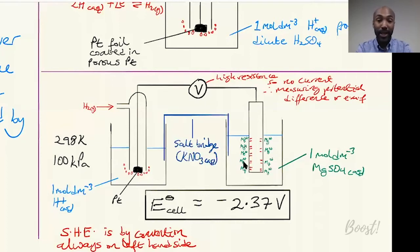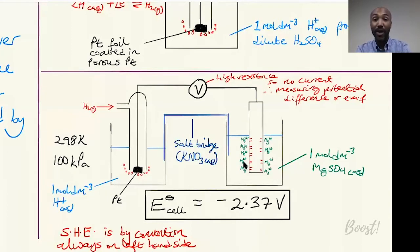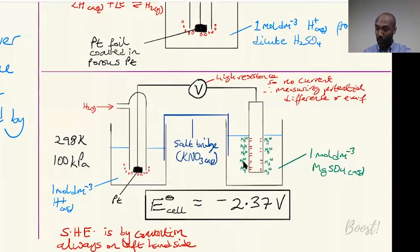To complete the circuit, we need a salt bridge - often filter paper soaked in potassium nitrate - joining the two beakers. The nitrate and potassium ions do not establish their own equilibria and so don't interfere with our measurement. They simply allow current to flow by moving between the two electrodes. That is how you measure the electrode potential of magnesium.